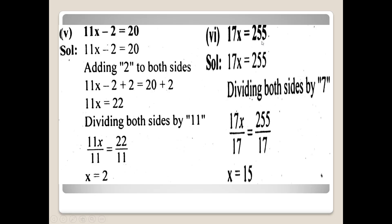Question number 6: 17x is equal to 255. Dividing both sides by 17 — تاکہ x single variable میں آ جائے اور اس کا coefficient 1 ہو۔ Left hand side اور right hand side دونوں پر 17 سے divide کریں۔ 17 اور 17 cancel out، تو x is equal to 255 divided by 17, which is 15. تو x is equal to 15۔